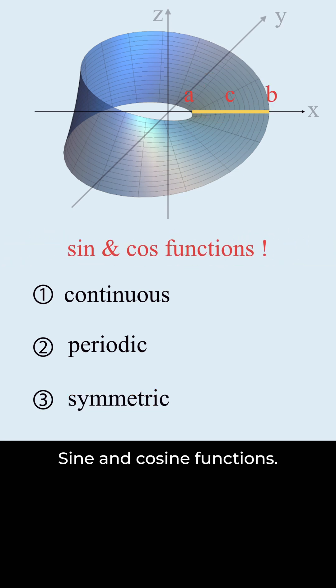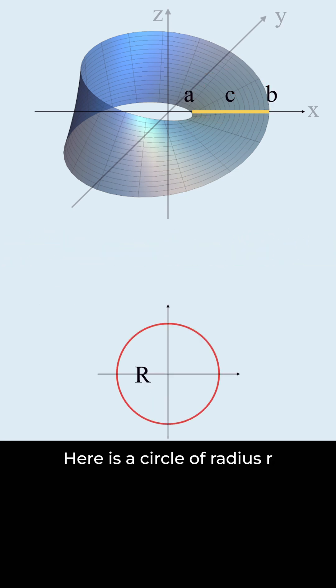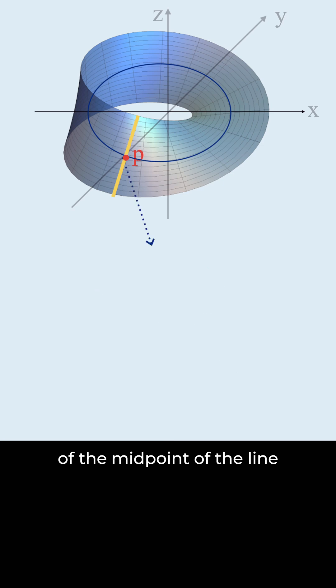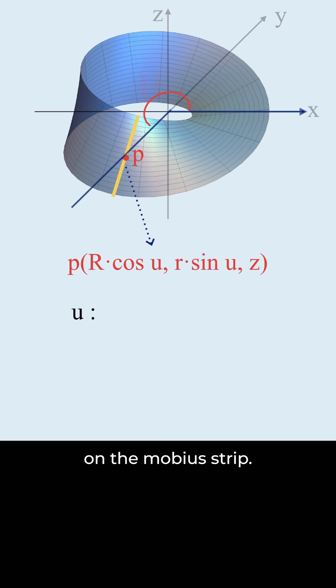Sine and cosine functions. Here is a circle of radius R with the angle of u. We use these values as the coordinates of the midpoint of the line on the Möbius strip. u represents the position of the line.